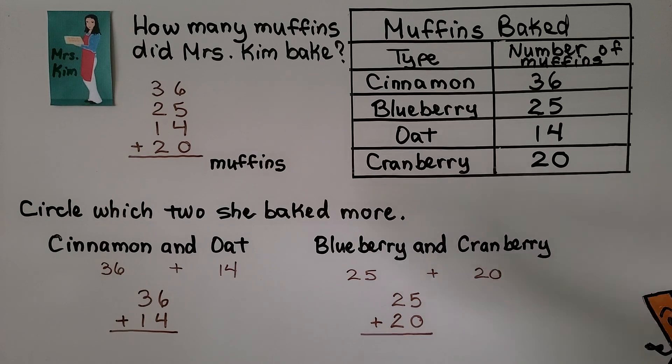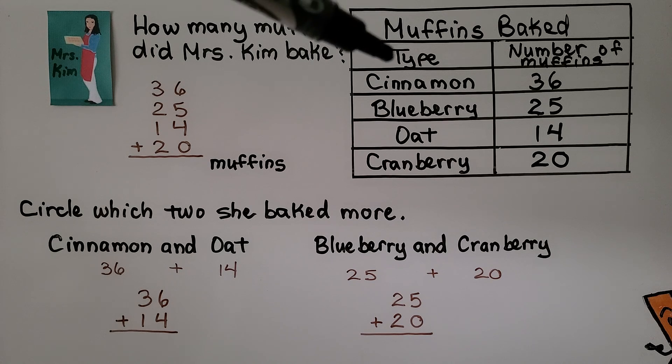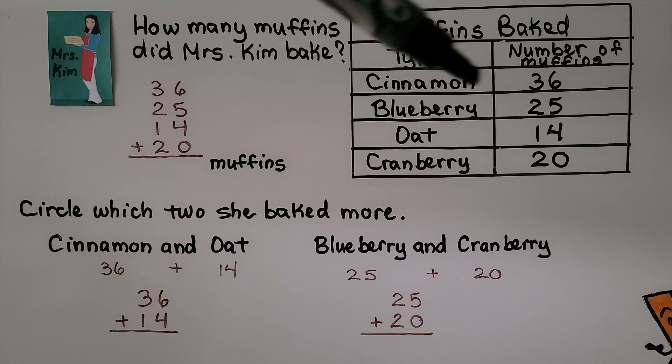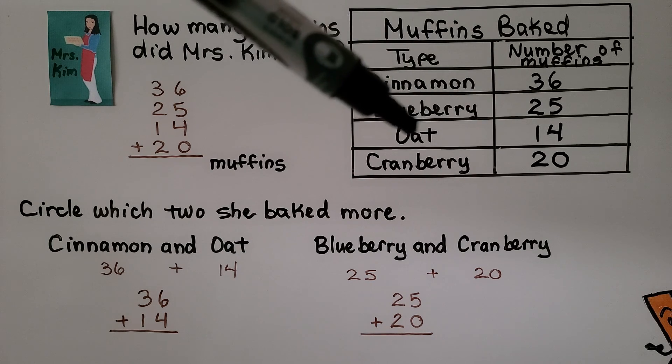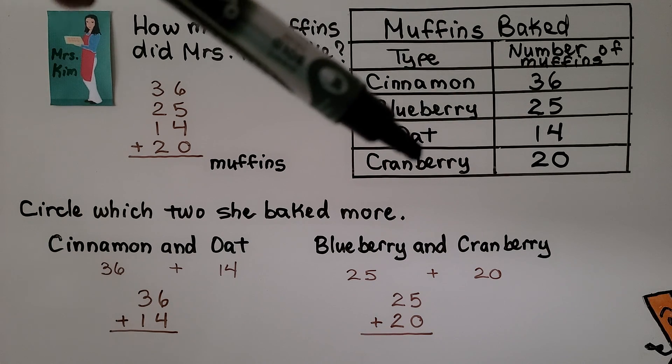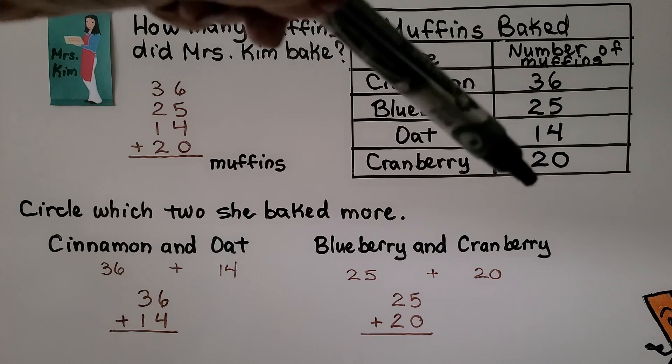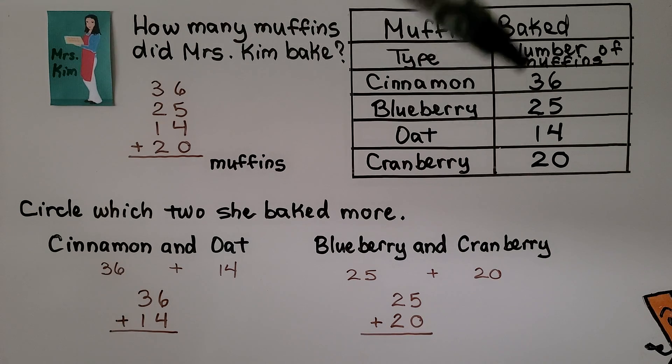Here we have a table and it says muffins baked: the type and the number of muffins. Cinnamon, there's 36. Blueberry, there's 25. Oat, there's 14. And cranberry, there's 20. It's asking us how many muffins did Mrs. Kim bake? Well, we need to add these numbers to know how many in all.